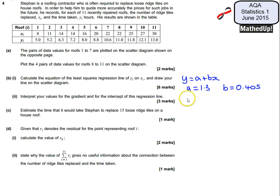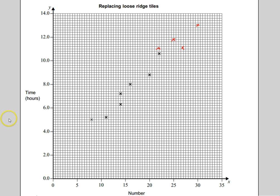So I can write down my equation now. It's going to be Y is equal to 1.3 plus 0.405X. I now need to draw this line on my scatter diagram so I'm going to move over to my scatter diagram now. I'm just going to copy this across with me.